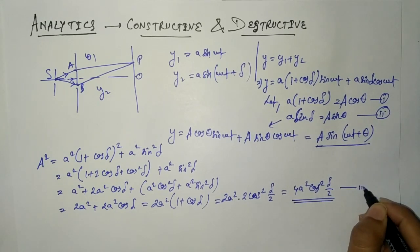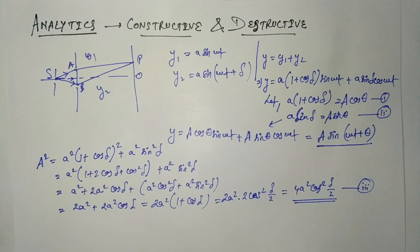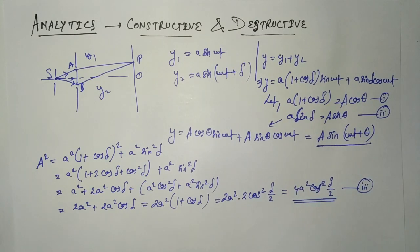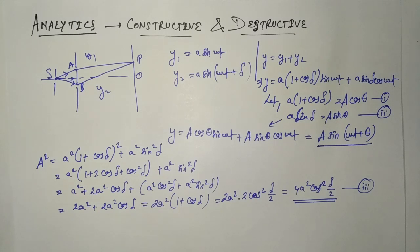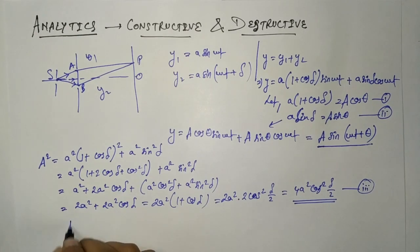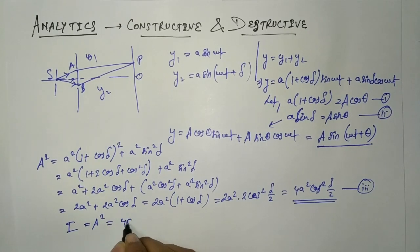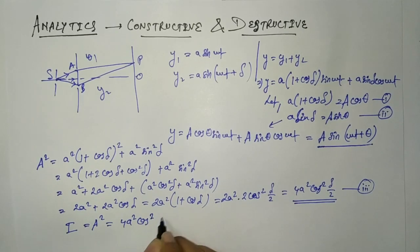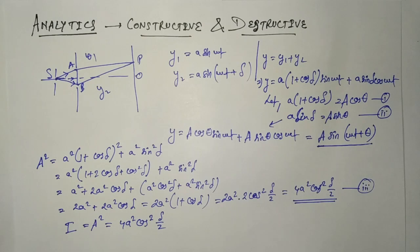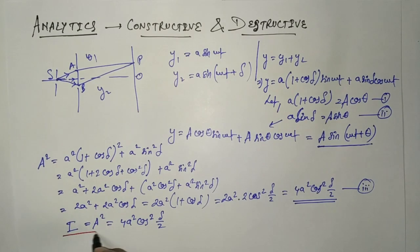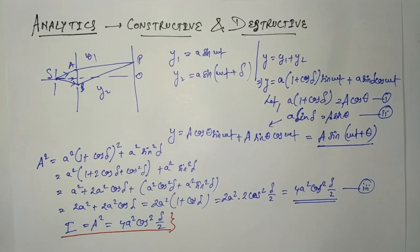The intensity of light is proportional to the square of the amplitude of the wave. For simplicity, we assume intensity equals the square of the amplitude. So the intensity I at P due to the superimposed waves is I = A² = 4a²cos²(δ/2). This is an important equation worth noting down.